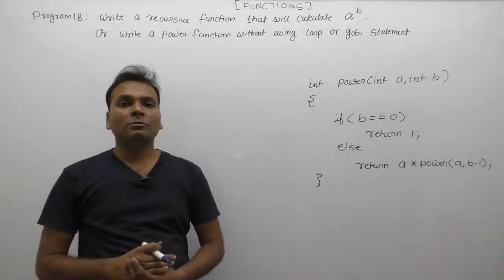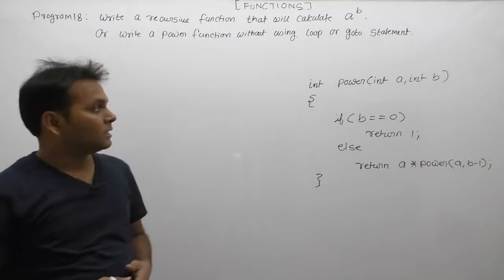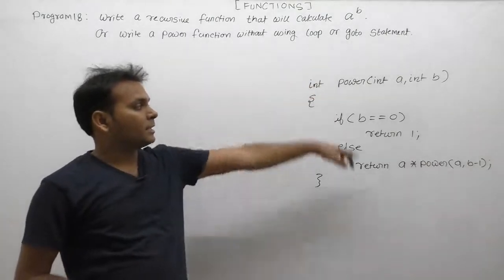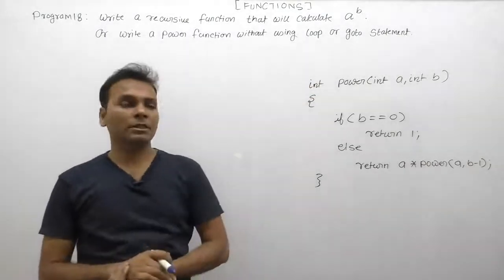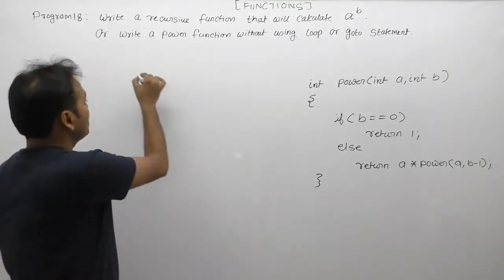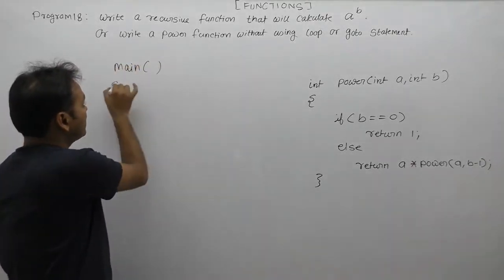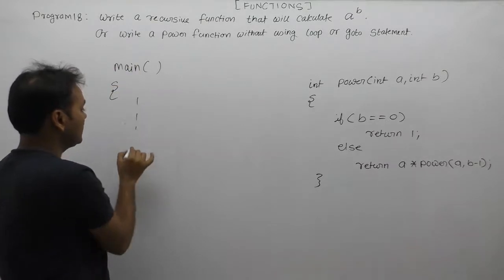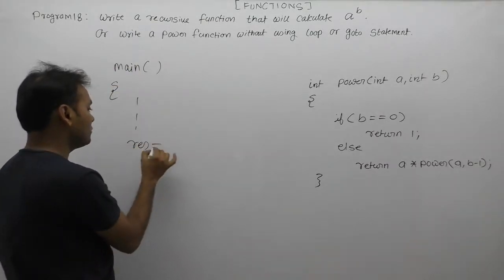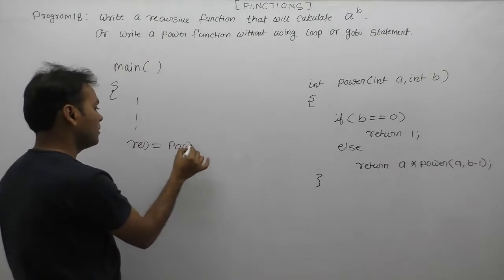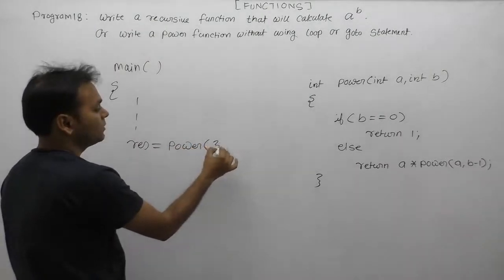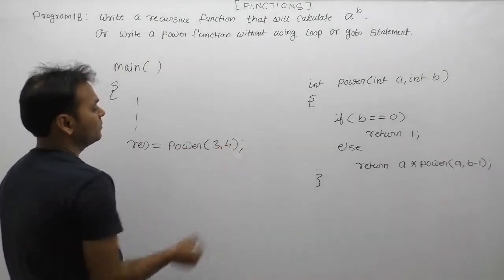Next, we will discuss how to execute this recursive function called power. Suppose we are calling this function somewhere inside the body of the main function. The main function calls the power function like this: result equals power of 3 to the power 4.